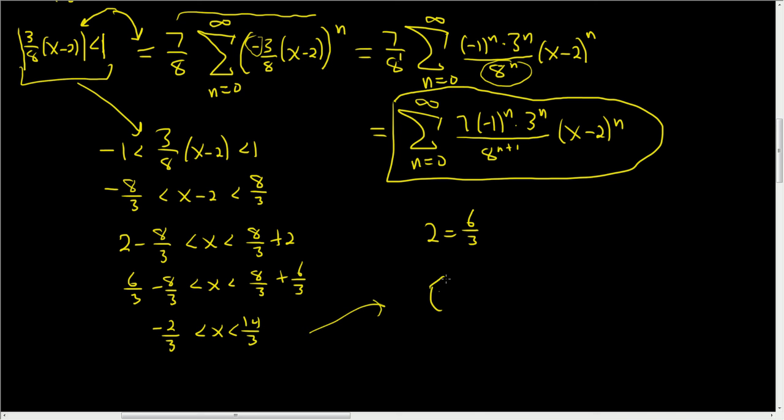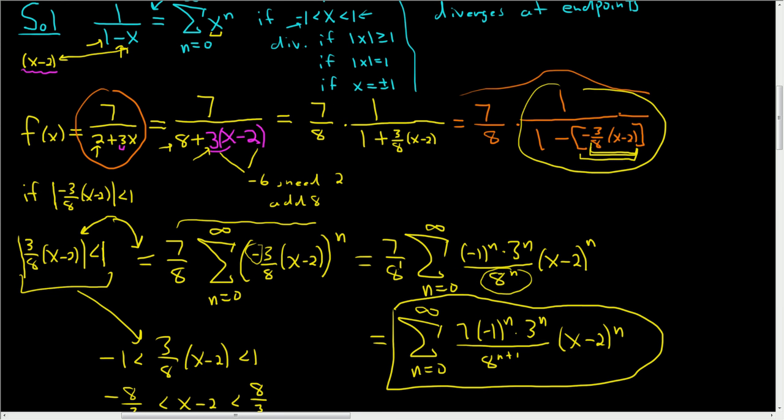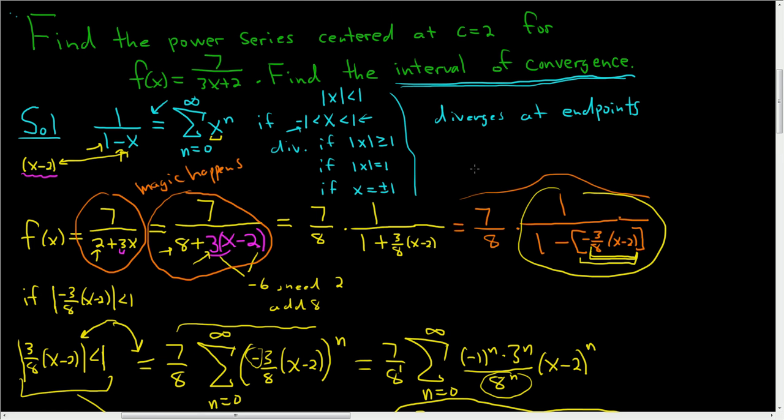So the interval of convergence is negative 2 thirds, comma, 14 thirds. And we don't have to check the endpoints, because we used a geometric series to do this, and it always diverges at the endpoints if you use a geometric series. So I hope this helps. I think it was kind of rushed, but hopefully someone out there who's working on this can get some use out of this example. I think the most interesting part of the entire problem is right here. This is where the magic happens. Another interesting thing is that whenever you use the geometric series test, it diverges at the endpoints. So you don't need to go through the whole checking of the endpoints. Just diverges at the endpoints.